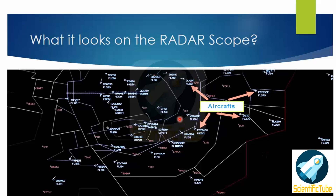Now let's have a look at how it appears on the radar scope when a pilot squawks the four digits given to him by the ATC. When the pilot squawks the four-digit code given by the ATC, it looks like this on the radar scope. Here you see all these white blips are the aircraft.